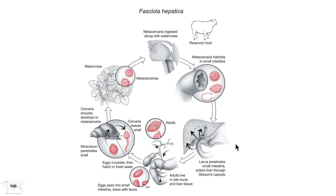The life cycle of Fasciola hepatica does not differ significantly from all of the other trematodes that we've discussed so far. It involves a snail intermediate host and a warm-blooded mammalian host.